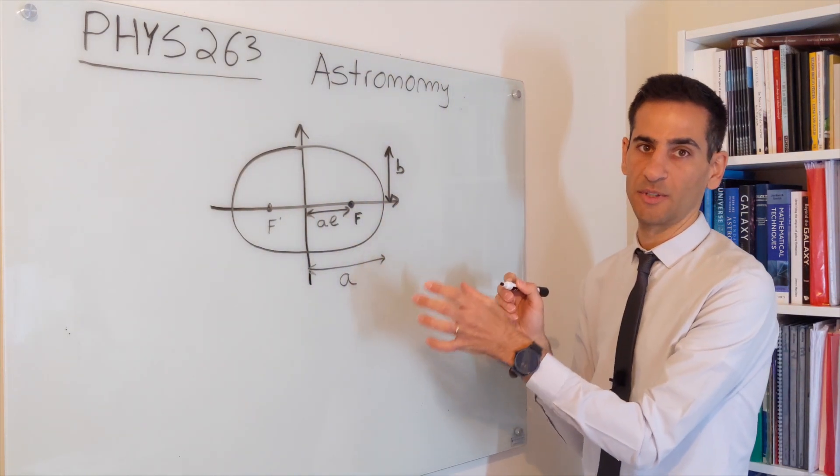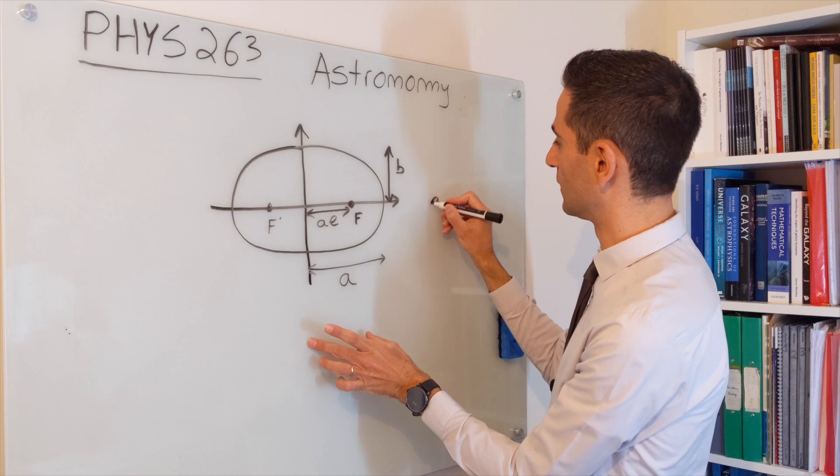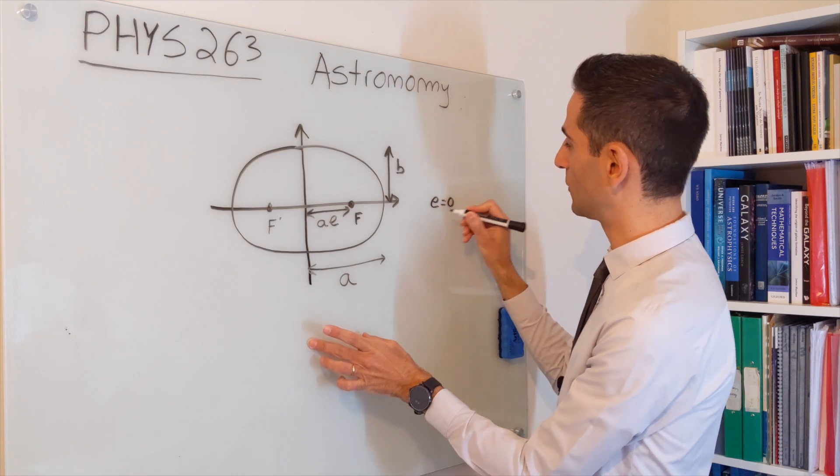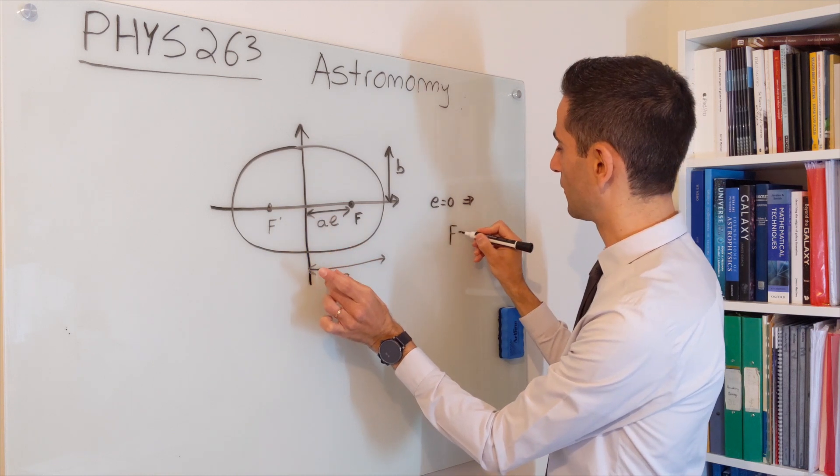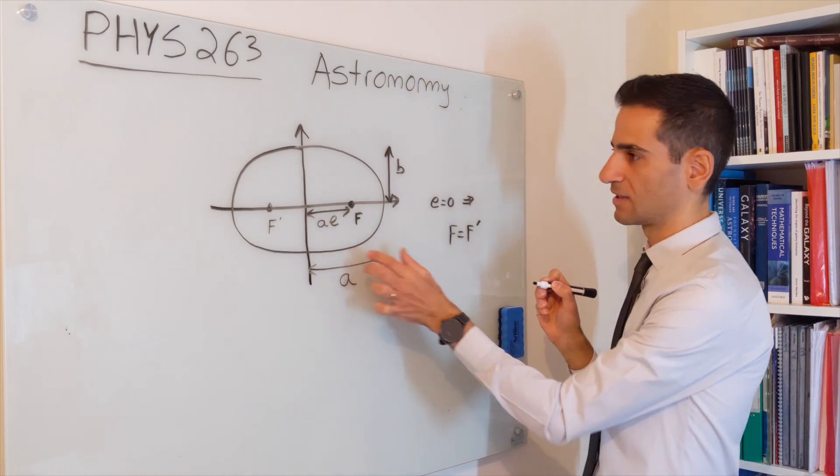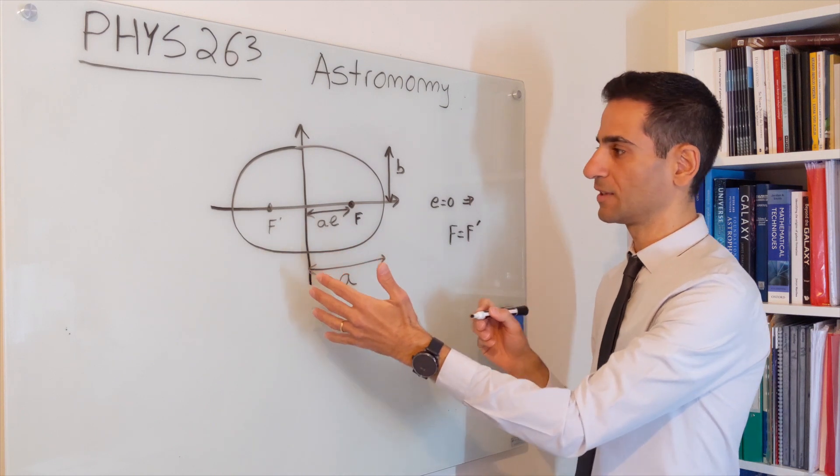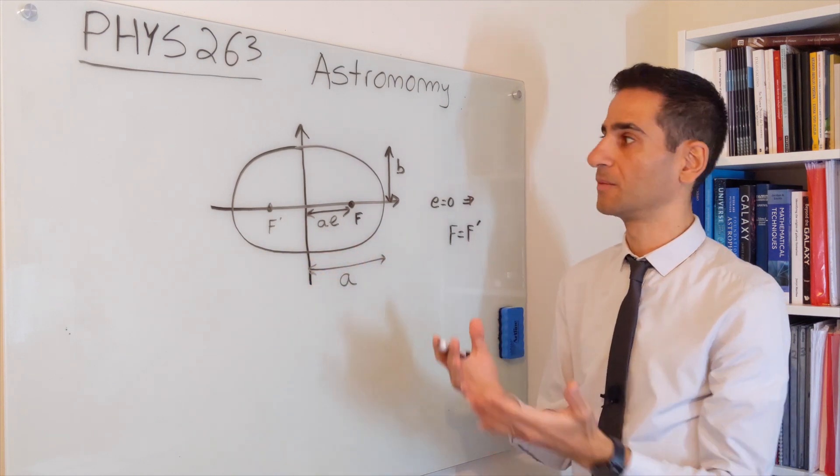The distance from here to here is actually given as a times e, where e is the eccentricity. You can very easily see that if e equals zero, then this distance becomes zero and f becomes the same as f prime, and the ellipse just becomes a circle.